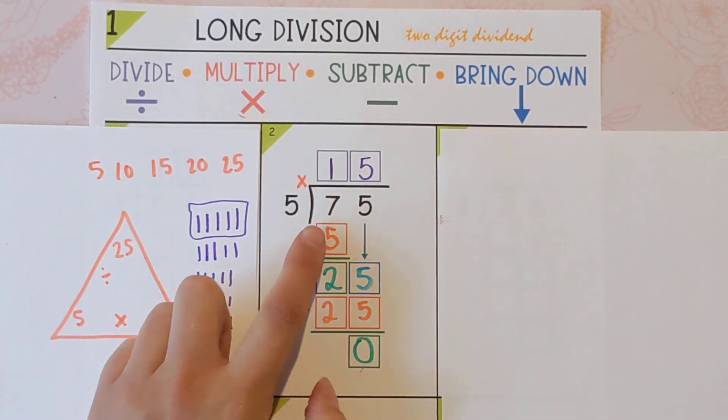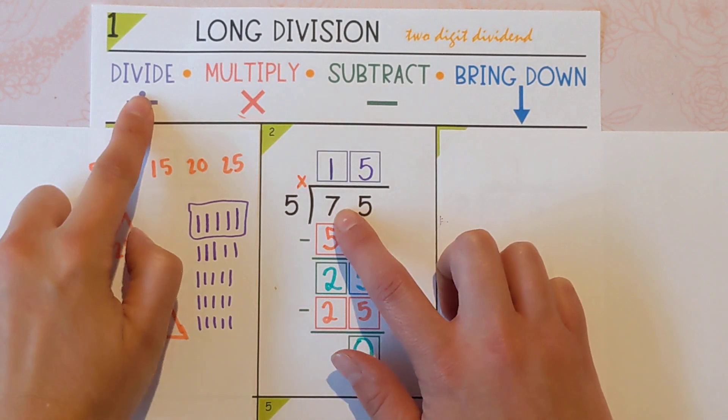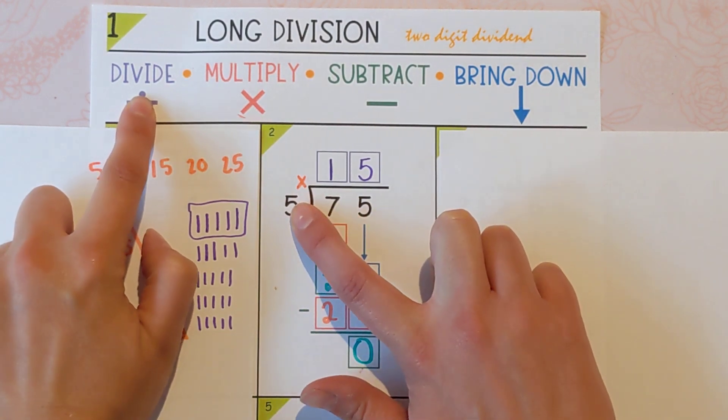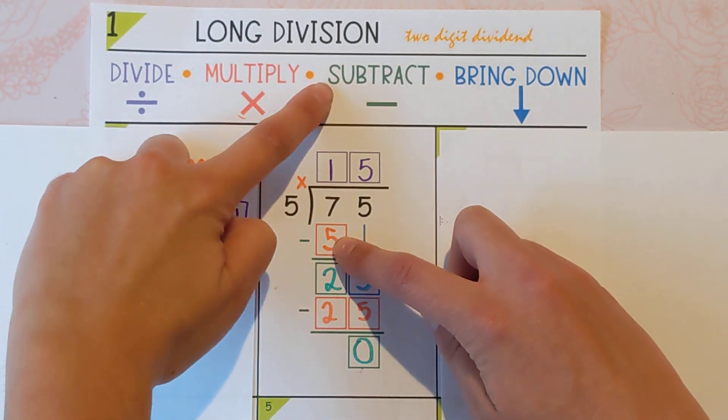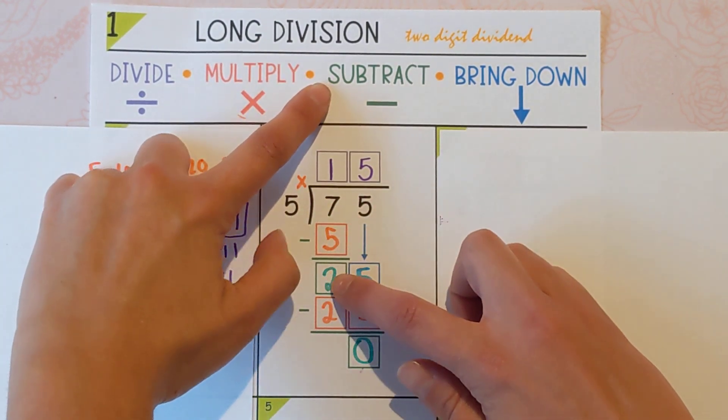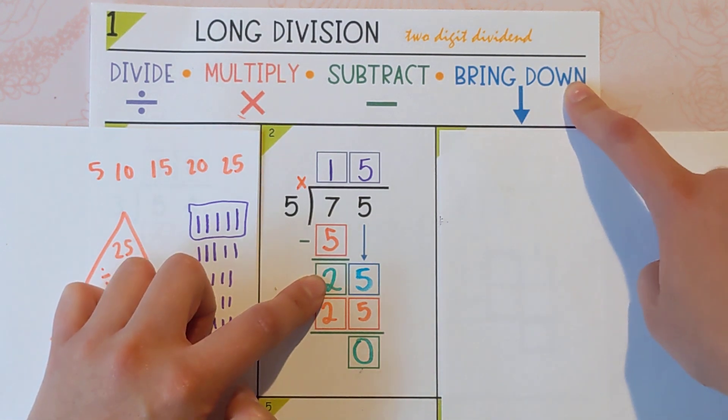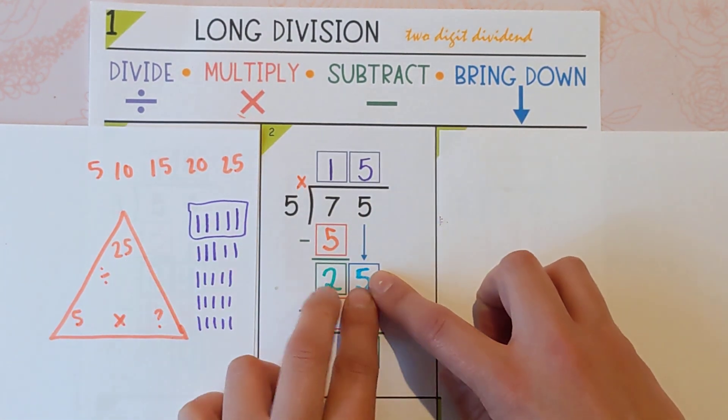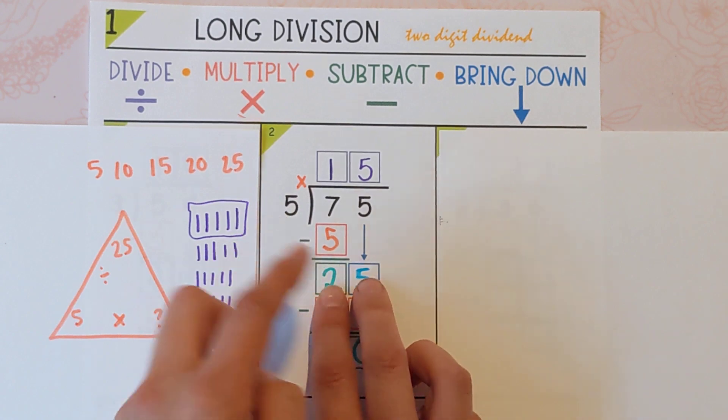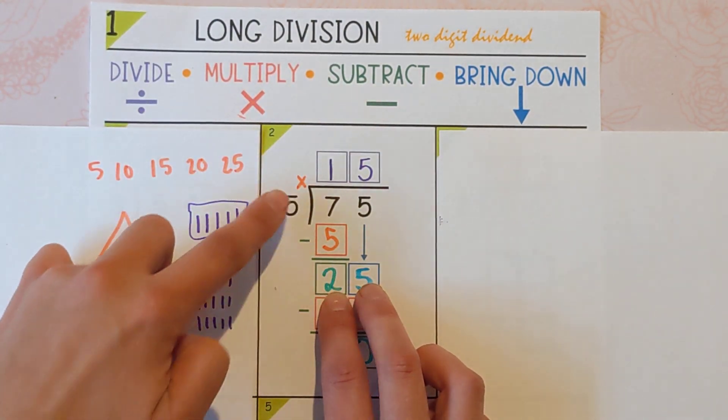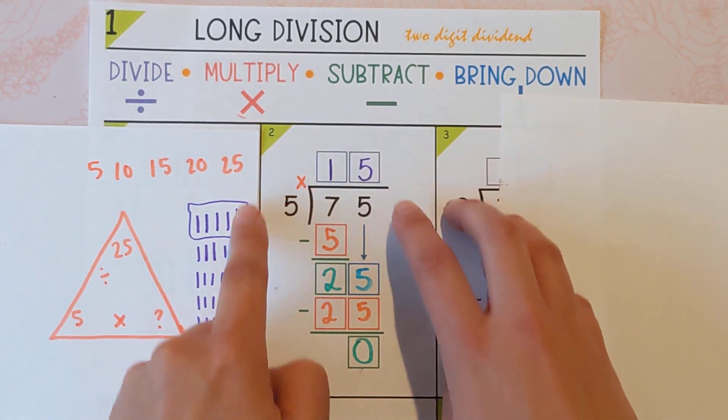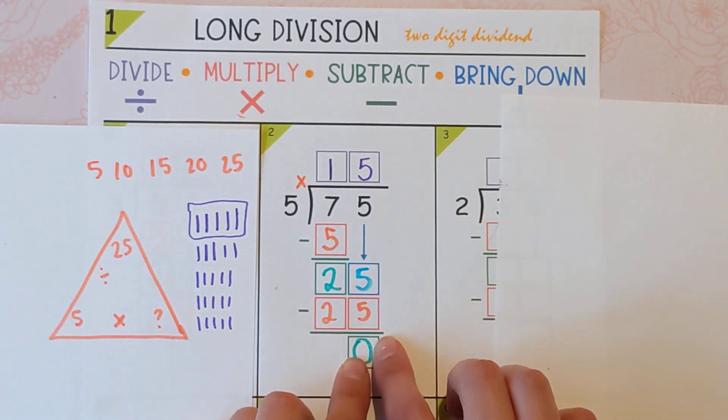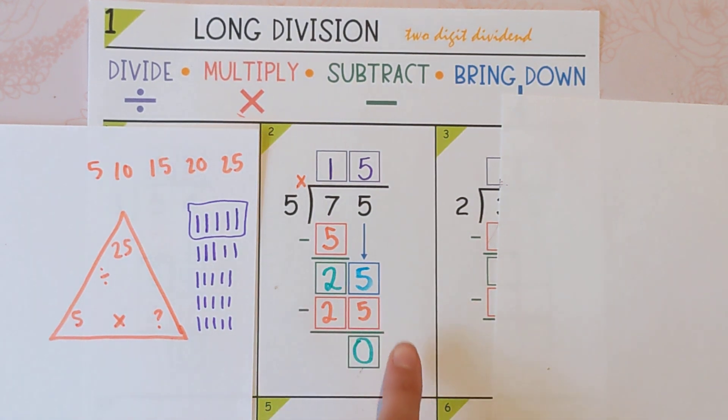So first we did divide. So we did 7 divided by 5, or how many 5s go into 7? Which is 1. Then we multiplied. 1 times 5 is 5. Then we subtracted. 7 minus 5 is 2. Then we bring down, or brought down the 5, and we had a 25 to work with as we started over. So then we divided again. 25 divided by 5 is 5. And then we multiplied. 5 times 5 is 25. Subtracted, got 0.